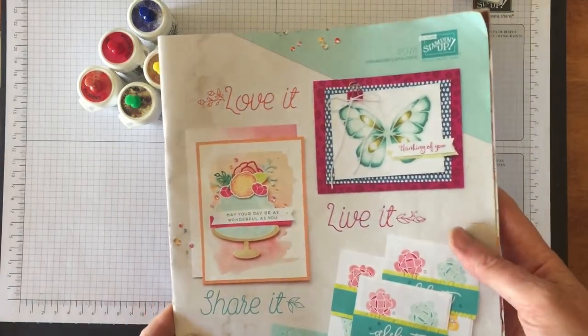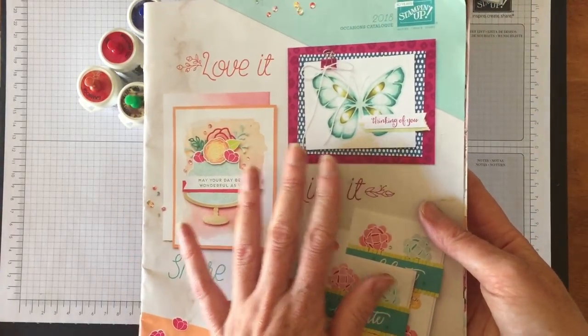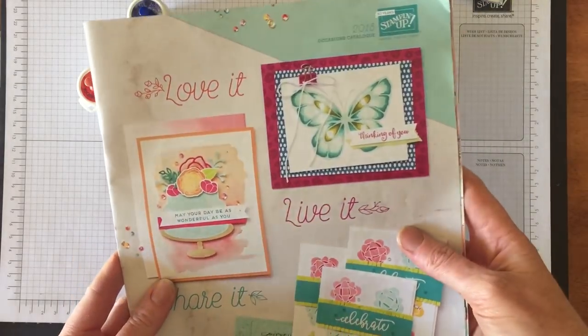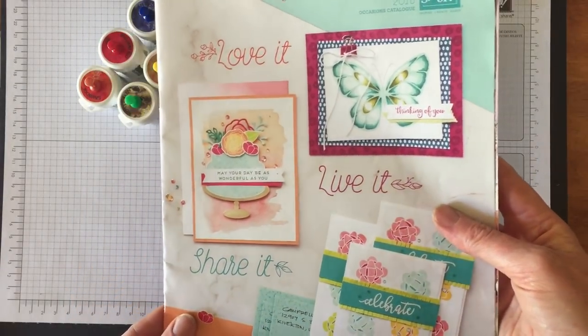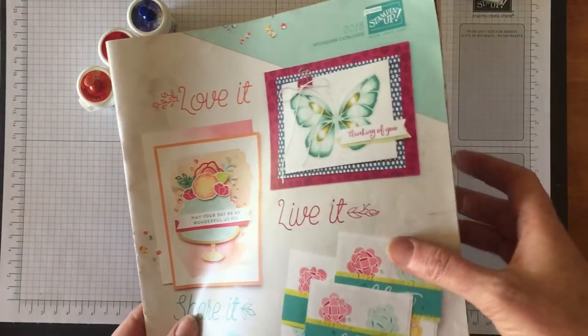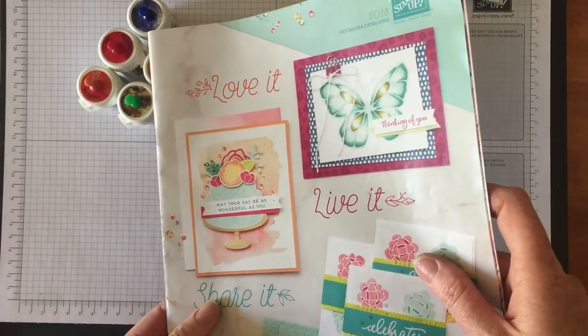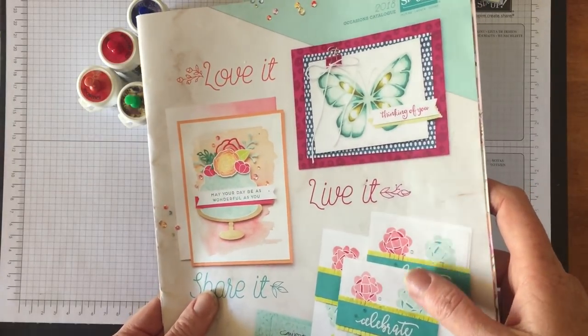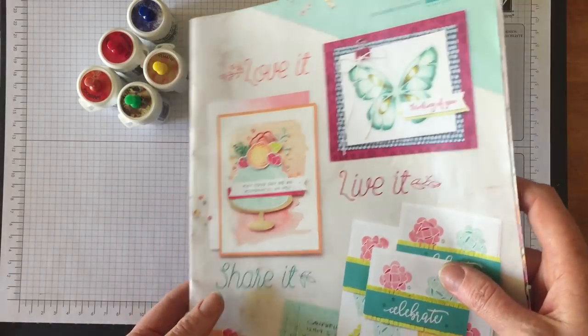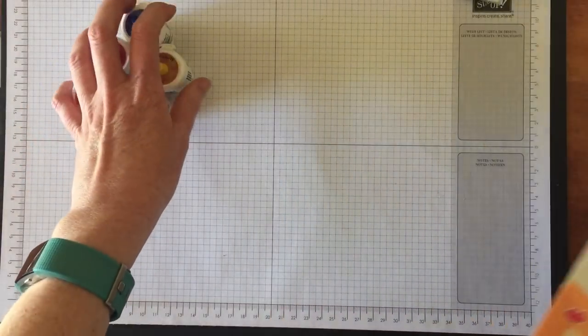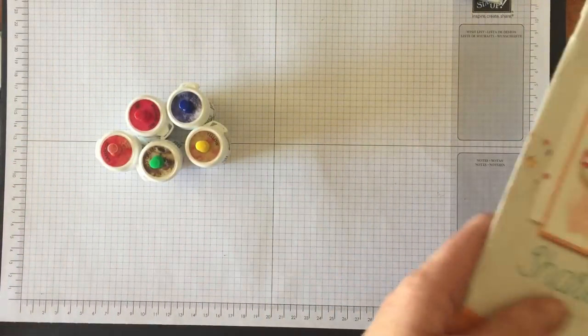The Brusho is available as of the 3rd of January in this occasions catalog. If you're in Australia and you'd like to make your purchases through me or you'd like to get your hands on one of these catalogues, make sure you email me or head over to my blog carolynbenning.com and contact me.